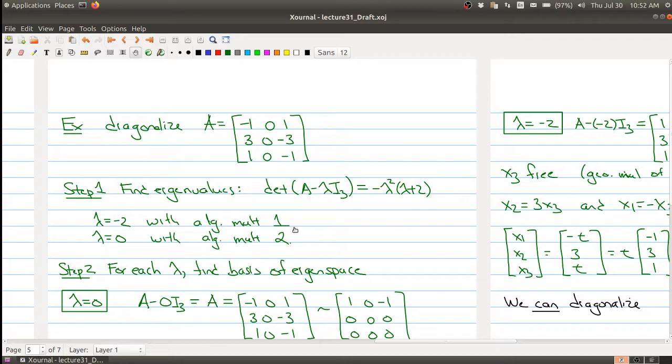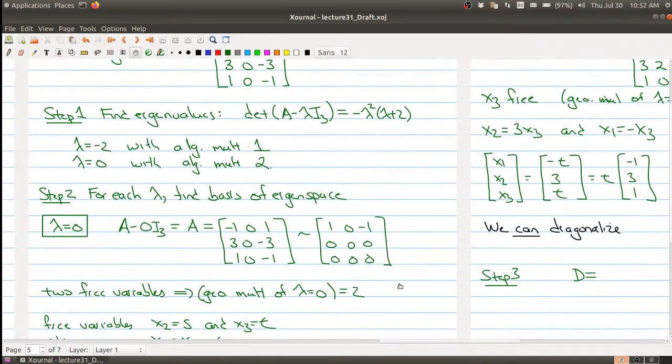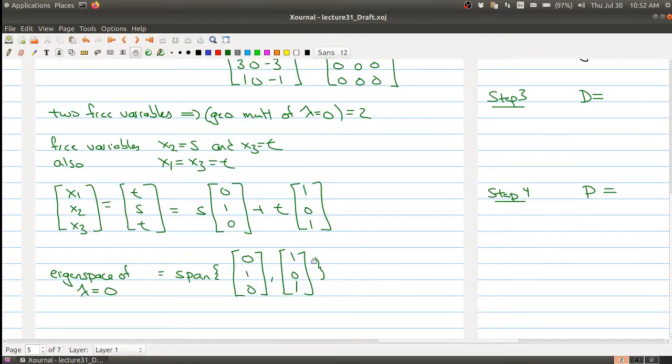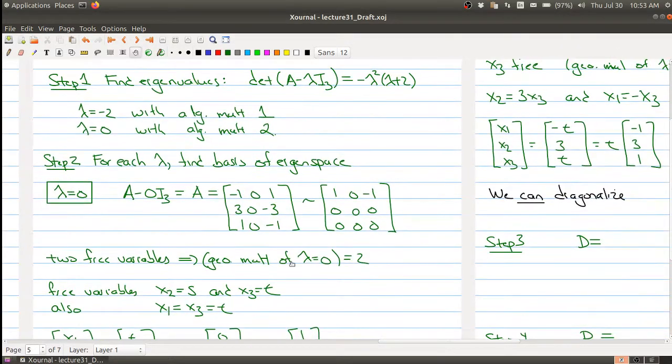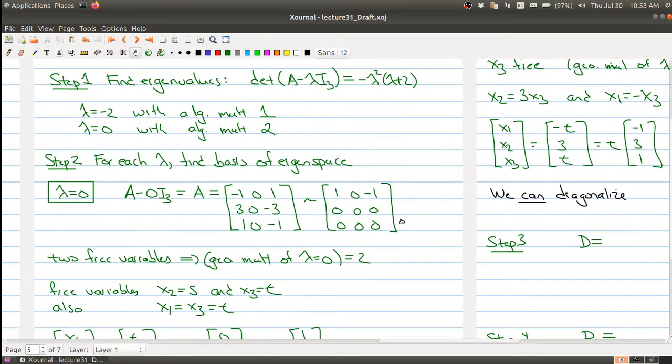We've computed the algebraic multiplicity of each of our eigenvalues. For lambda equals 0, we found that the eigenspace is two-dimensional, so the geometric multiplicity is equal to the algebraic multiplicity. That's good.